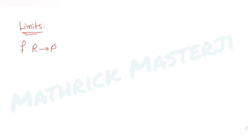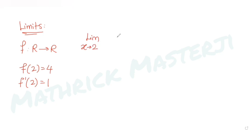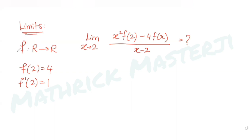Today's question is from the topic of limits. The question tells us: let f be a function in the 2D plane of real numbers such that f(2) = 4 and f'(2) = 1. We are asked to find the value of the limit as x tends to 2 of [x² f(2) − 4f(x)] divided by [x − 2].